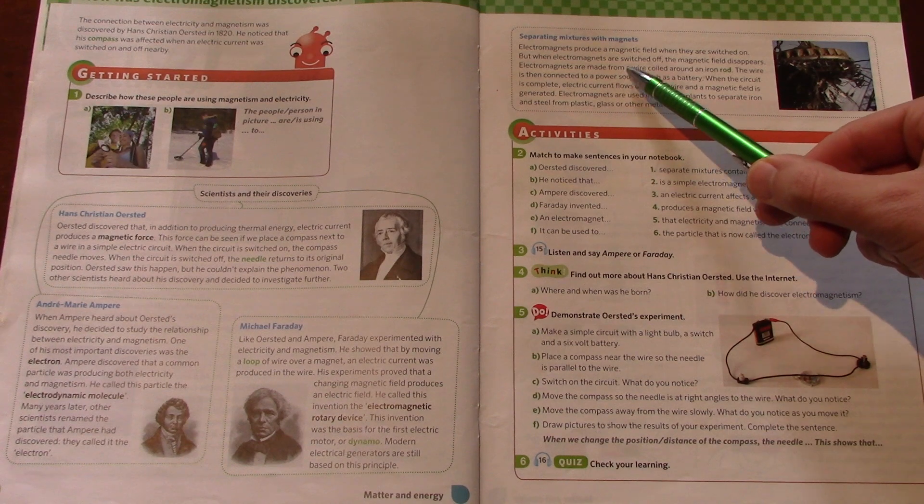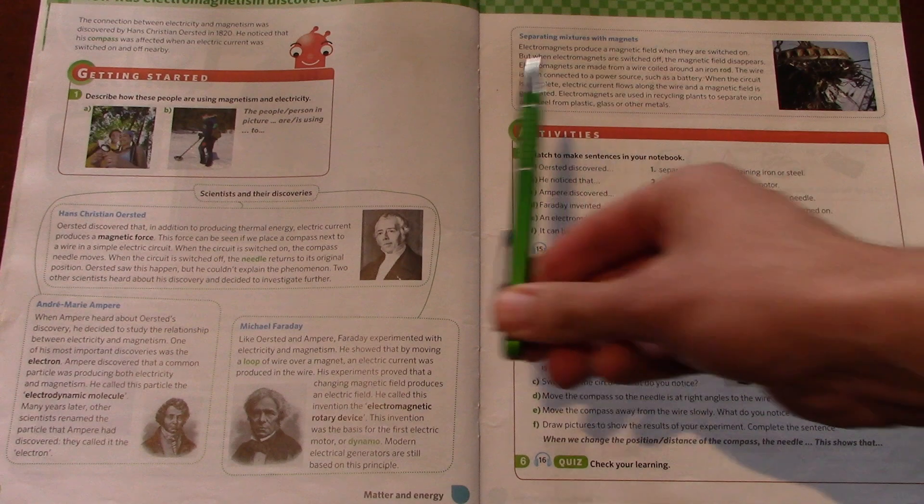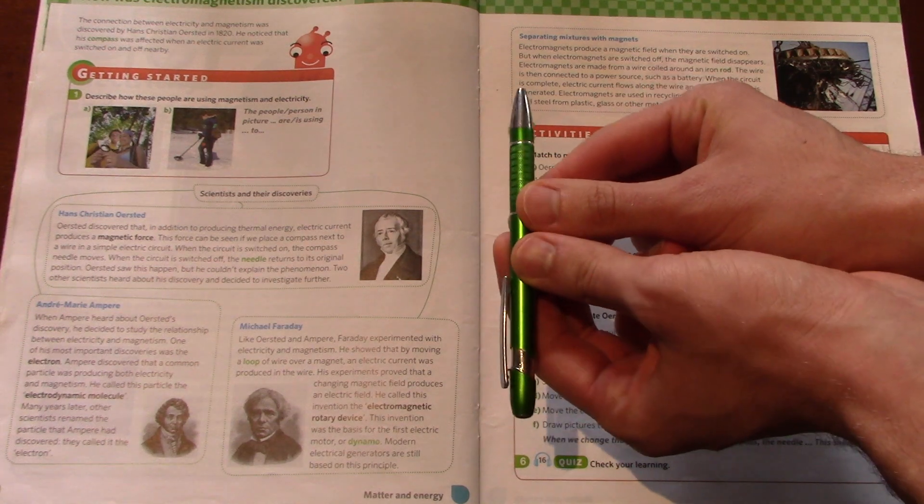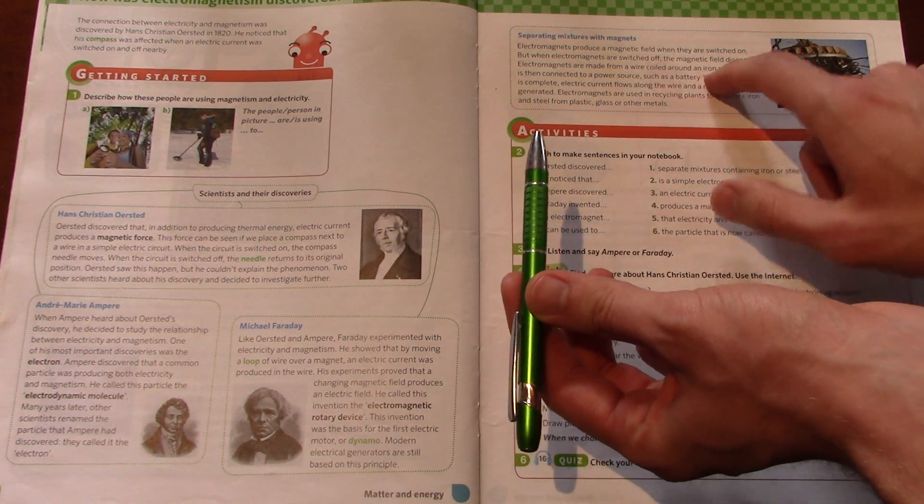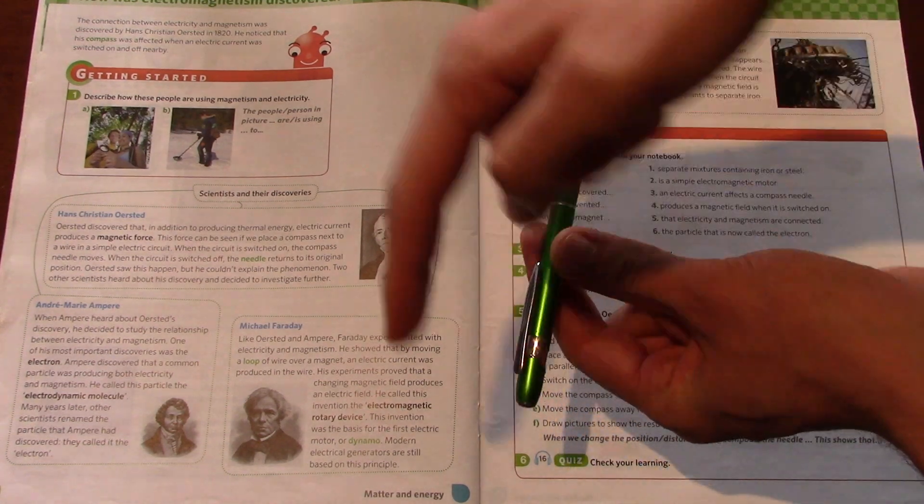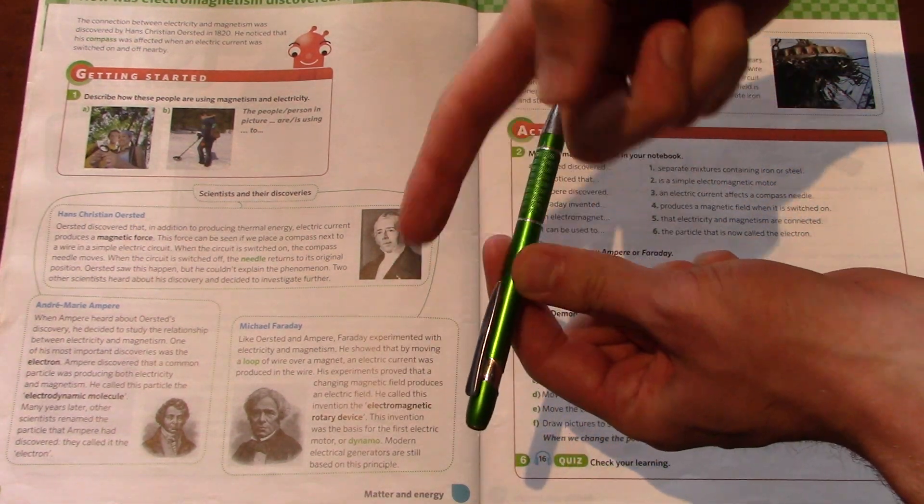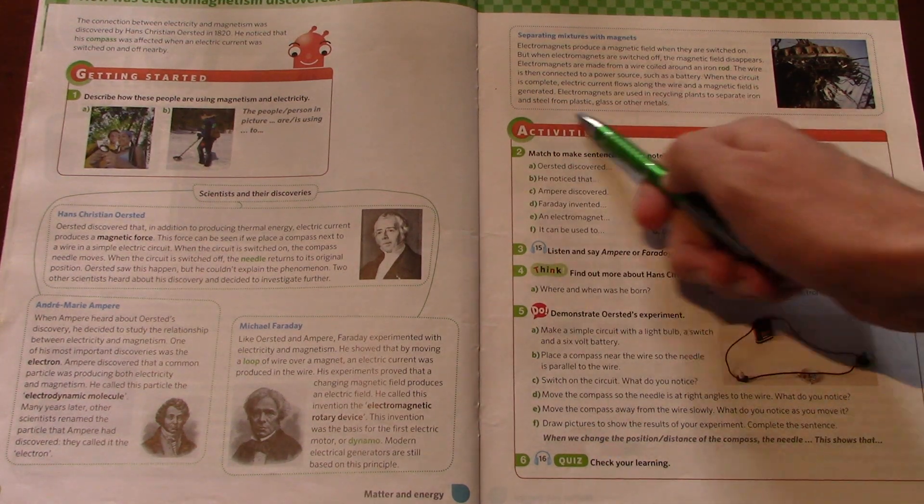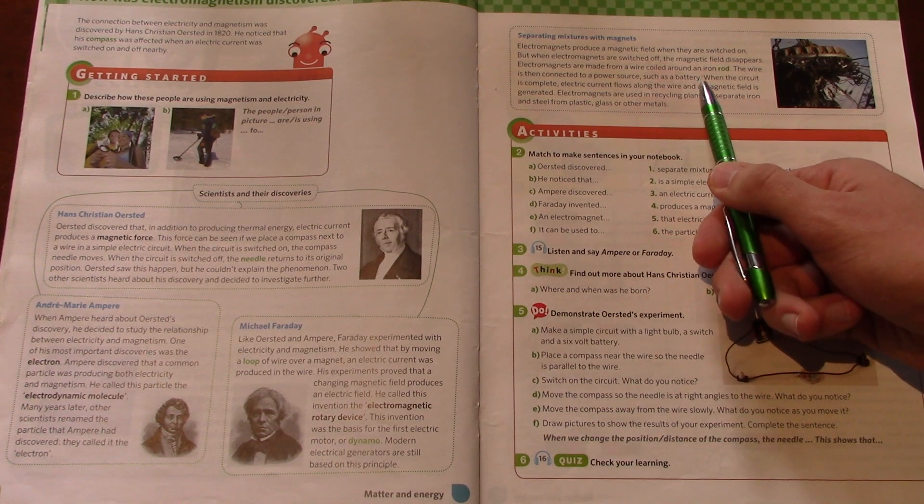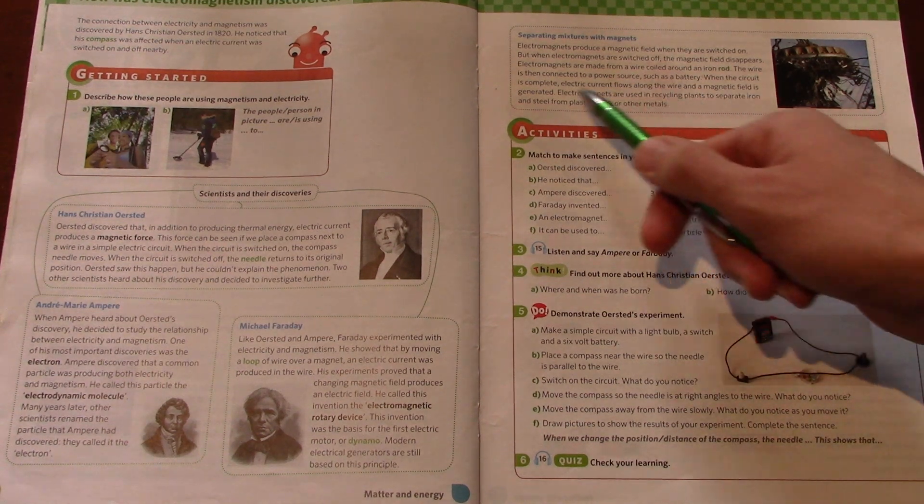Electromagnets are made from a wire coiled around an iron rod. So imagine this is the rod. A rod is a straight piece of usually metal. So here, the rod is made of iron. And we have a wire coiled. Coiled means twisted around. So we have a wire twisted around the rod. The wire is then connected to a power source, such as a battery. When the circuit is complete, electric current flows along the wire and a magnetic field is generated.